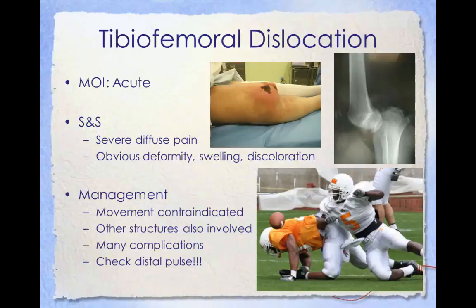Knee dislocations are commonly accompanied by arterial and nerve injuries. Most anterior dislocations result from hyperextension, while most posterior dislocations result from a posteriorly directed force to the proximal tibia while the knee is slightly flexed. Most knee dislocations result from severe trauma such as a high-speed motor vehicle crash, but seemingly slight trauma — such as stepping in a hole and twisting the knee — can sometimes also dislocate the knee. A dislocation of the knee will frequently injure surrounding supporting structures, causing joint instability, which is a common long-term complication.